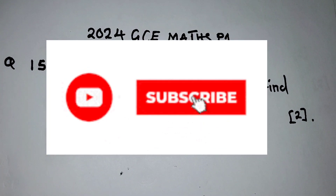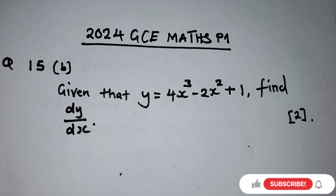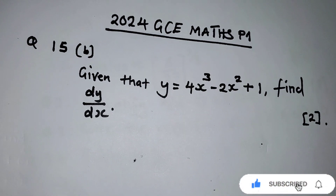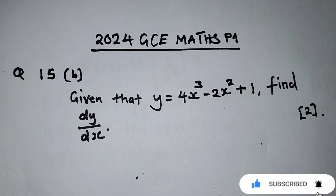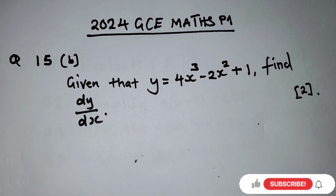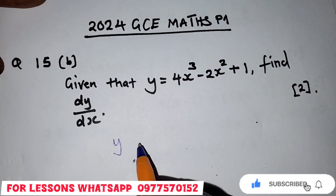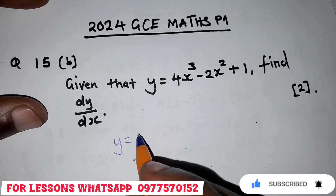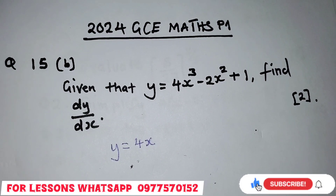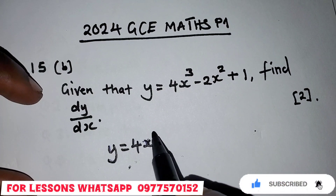Okay guys, we have question 15b of the 2024 GCE Mathematics Paper 1. Given this function, we're asked to find dy/dx. So I'm going to write this function as y equals 4x to the power 3.